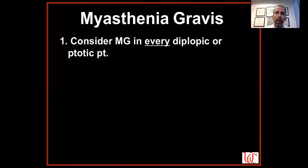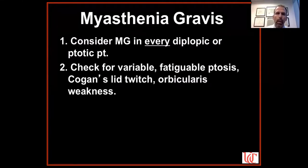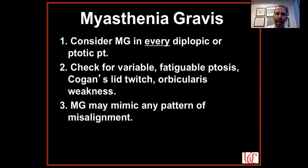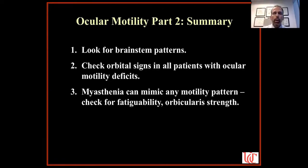In summary for myasthenia: consider it in everyone with double vision or ptosis. Check for variable, fatigable ptosis, Cogan's lid twitch, and orbicularis weakness. Remember that myasthenia can mimic any pattern of ocular misalignment — hence consider it in anyone with double vision. Rest and/or ice testing can be helpful. In summary for ocular motility part two: look for brainstem patterns — INOs, one-and-a-half, gaze palsies. Don't forget to check the fellow travelers. Look for orbital signs — exophthalmos, chemosis. Remember myasthenia can mimic any motility pattern; check for fatigability and orbicularis strength.